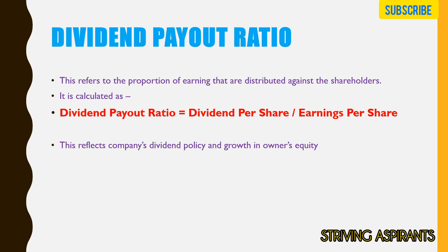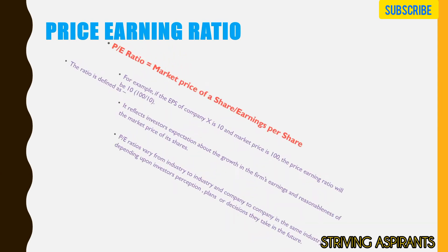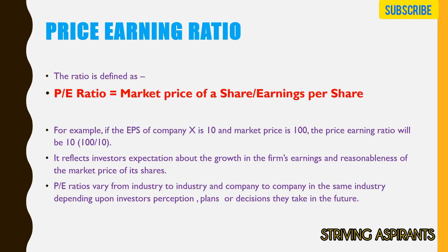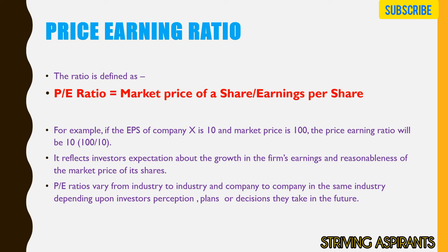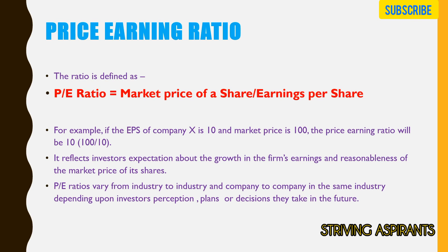Lastly, the Price-Earnings (P/E) Ratio is calculated as: Market Price of a Share divided by Earnings Per Share. For example, if EPS of a company is 10 and market price is 100, the price-earnings ratio will be 100 divided by 10, which equals 10. This ratio reflects investors' expectations about the growth in the firm's earnings and the reasonableness of the market price of its shares. This ratio varies from industry to industry and company to company, depending upon investors' perception of their future.